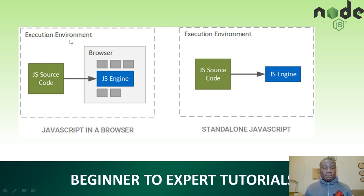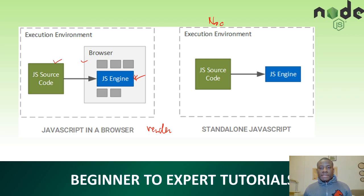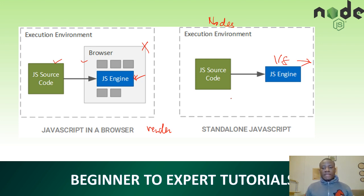Let's look at one more diagram. When you run JavaScript in a browser, your JavaScript goes into the browser, comes into the JavaScript engine which is inside the browser, and it renders something that you can see. But when it comes to Node.js, the browser is no longer there — you have the JavaScript source code, it passes through the V8 engine, and gives you an output. The V8 engine bypasses the browser; it doesn't need the browser to work. It can work on its own, interpret scripts, and provide the needed output.